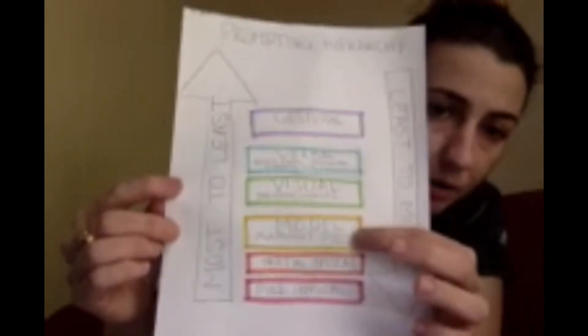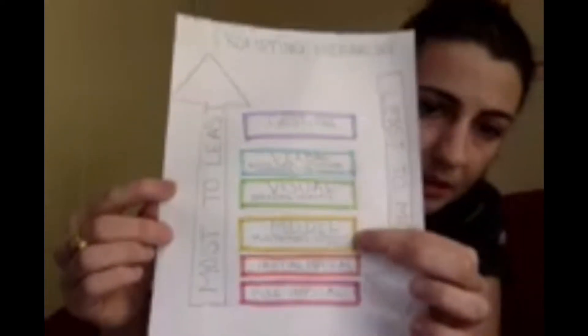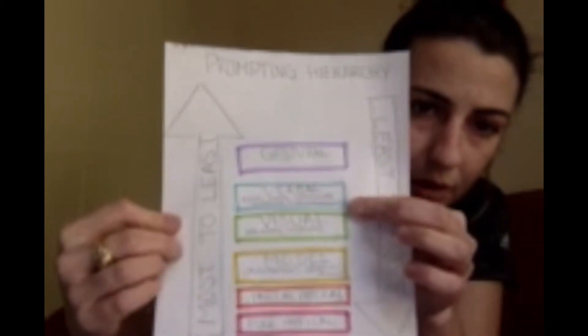Here is a visual aid starting with our most intrusive: full physical prompting, partial physical prompting, model prompting — which can be either echoic, motor, partial, or full models — visuals, pictures and objects, verbal prompts including clues, hints, commands, questions, and rule statements, and then finally our least intrusive prompt: gesturals.